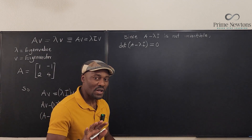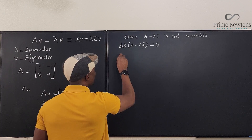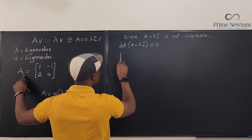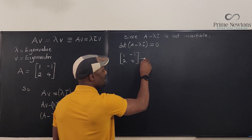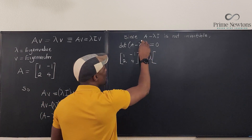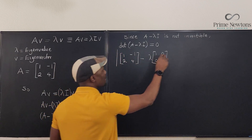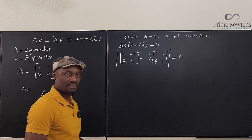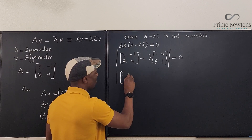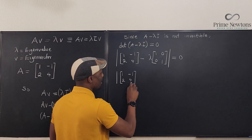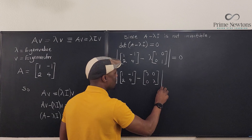Let's begin our calculation. We need to find det(A - λI) = 0. Our matrix A is [1, -1; 2, 4], and λI is λ times [1, 0; 0, 1]. So we're computing the determinant of [1, -1; 2, 4] minus λ[1, 0; 0, 1], and setting it equal to zero.